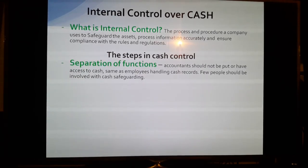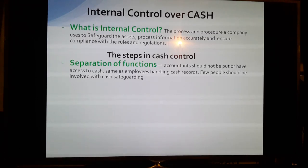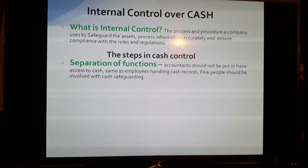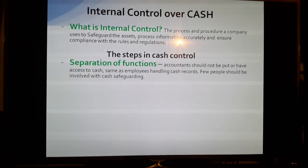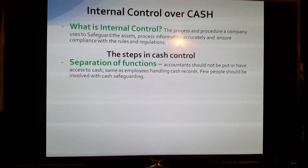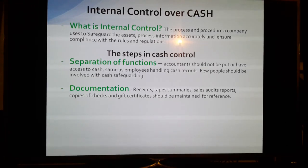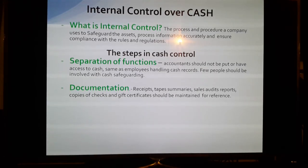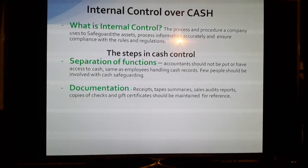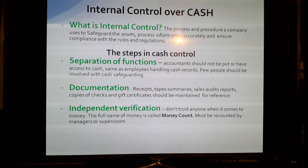First is separation of functions. Accountants should not have access to cash, and employees handling cash should not also handle cash records. They should not have the same responsibilities. There should be few people involved in safeguarding cash. Documentation — receipts, tip summaries, sales audit reports, copies of checks, and gift certificates — should be maintained for reference.